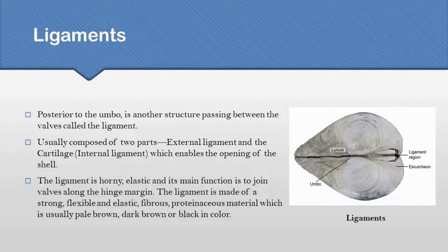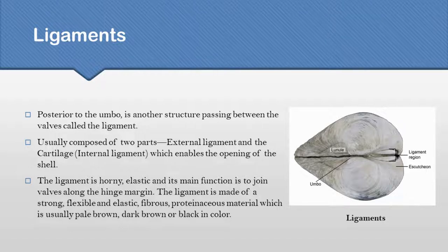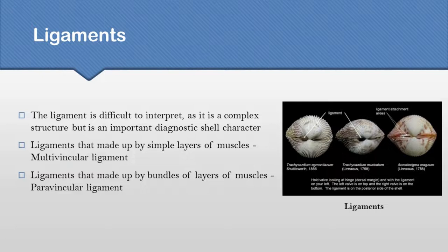A ligament is a fibrous connective tissue which functions to hold structures together and keep them stable. The ligaments of Pelecypoda are found generally posterior to the umbos. It is composed of two parts: the external ligament and the cartilage. Its main function is to join the valves along the hinge margin. Multivincular ligaments are made up of simple layers, while paravincular ligaments are made up of bundles of layers.